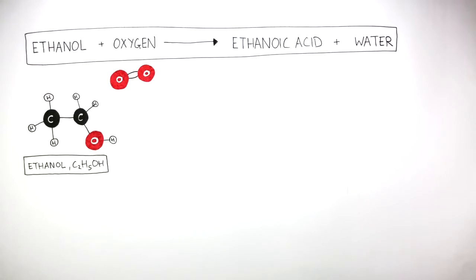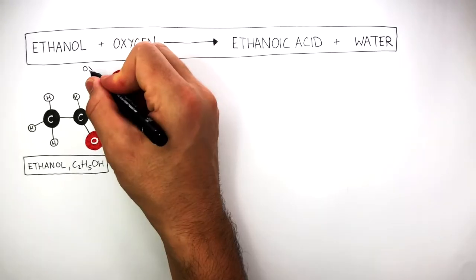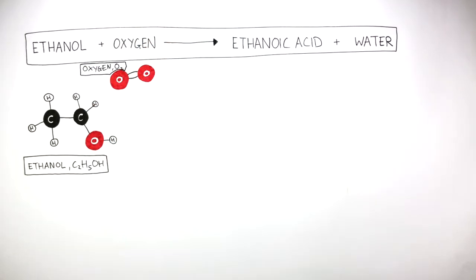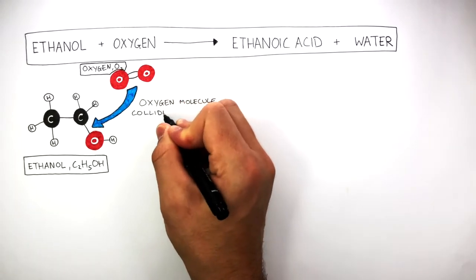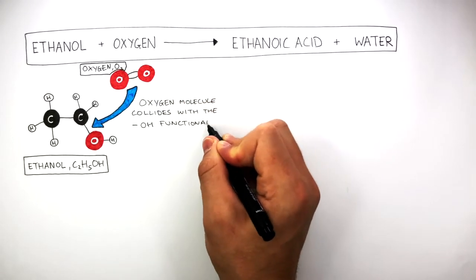This ball and stick model represents the oxygen molecule, O2, which has a double covalent bond between the two oxygen atoms. This blue arrow shows how in a chemical reaction, the oxygen molecule collides with the OH functional group.